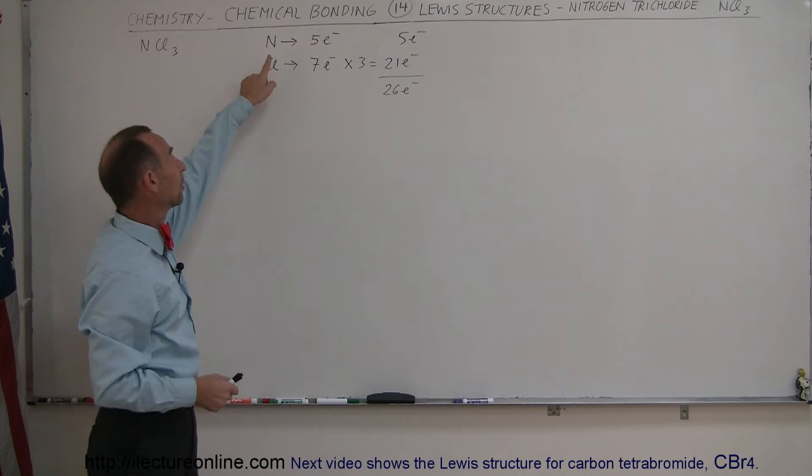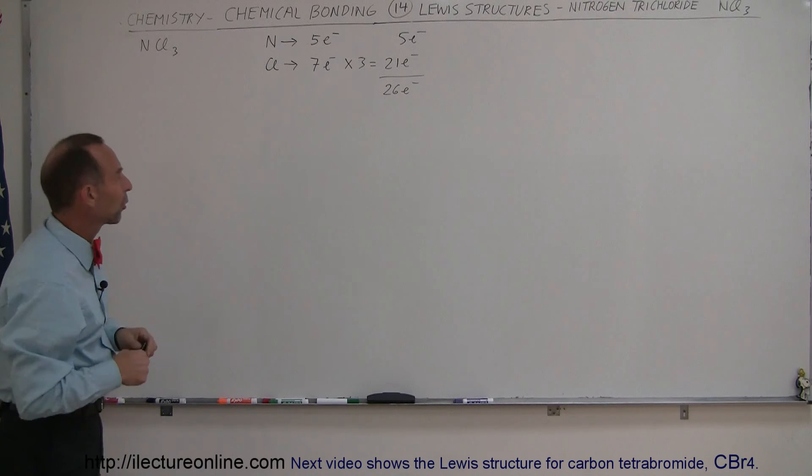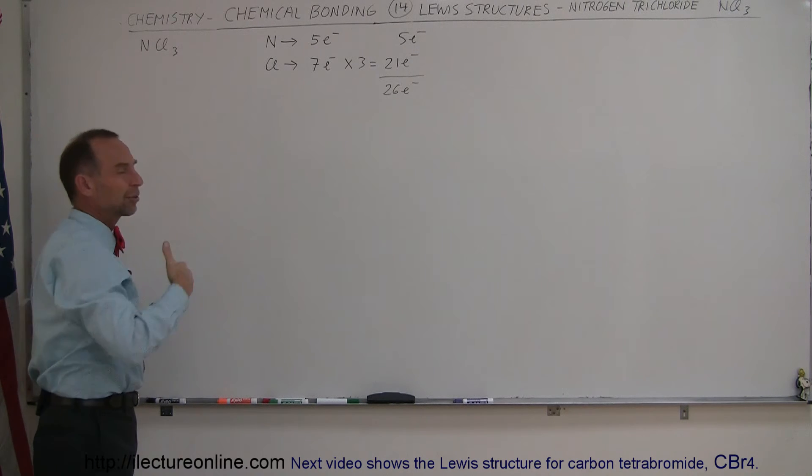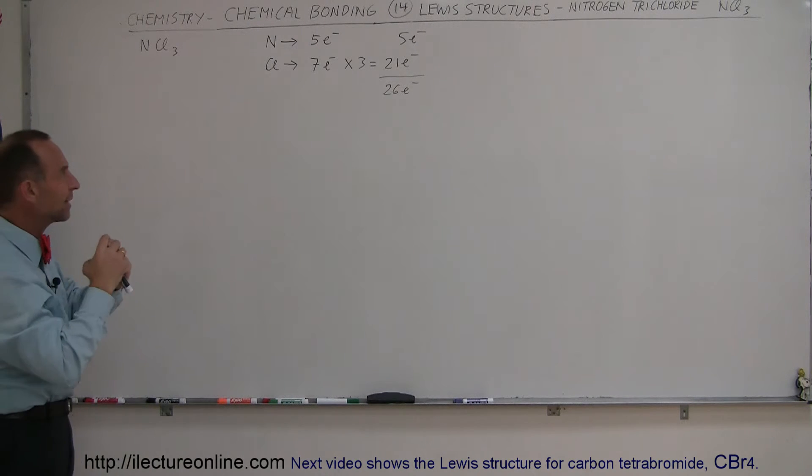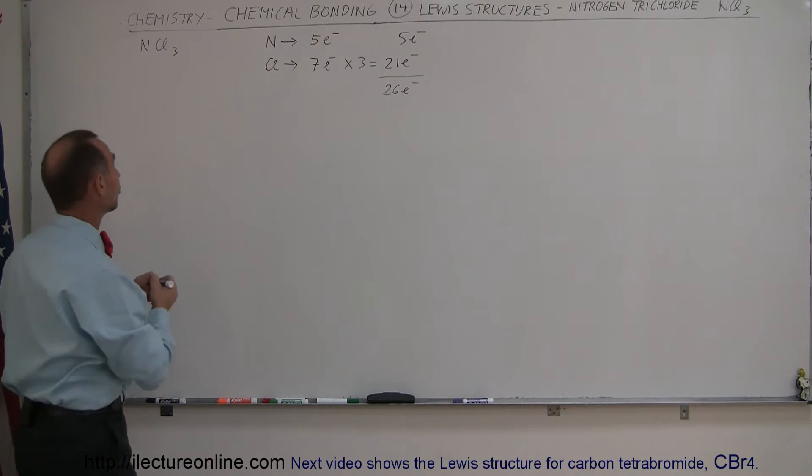The three chlorines probably will make a single bond with nitrogen, so everybody then would be satisfied. Let's see if that works out. Also, we realize that nitrogen has the lowest electronegativity, which tends to make that the central atom. And chlorine, therefore, needs to cluster around the nitrogen.